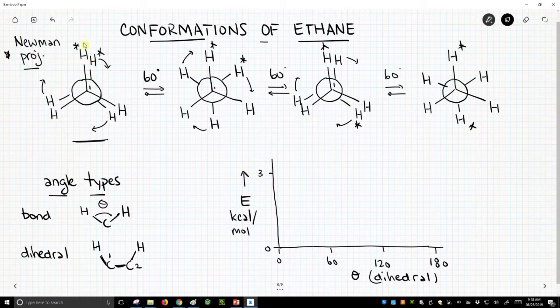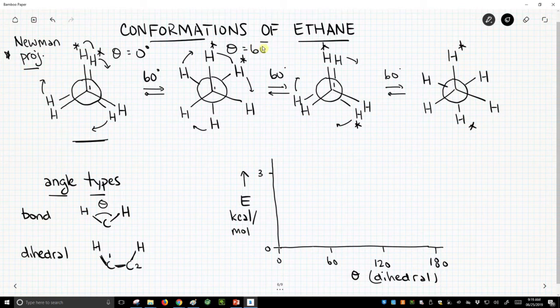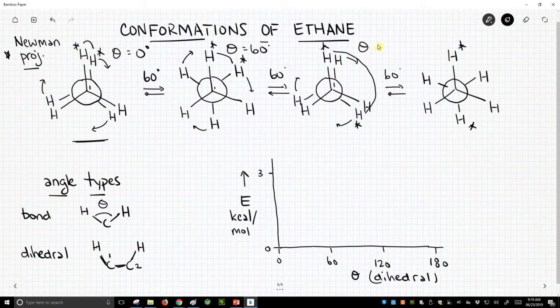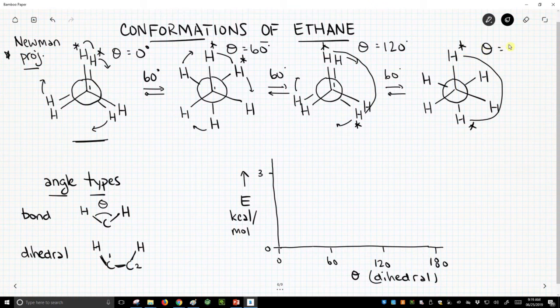So for this particular Newman projection, the angle between those two hydrogens is 0 degrees. The separation, this dihedral is 60 degrees. This dihedral between the two starred or sticky note hydrogens is 120, and this dihedral is now 180.